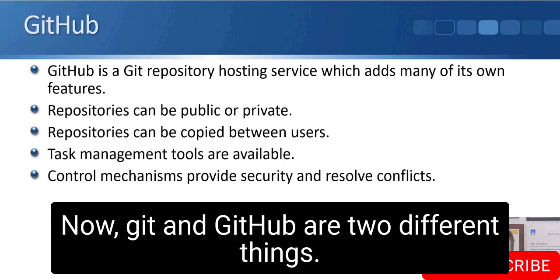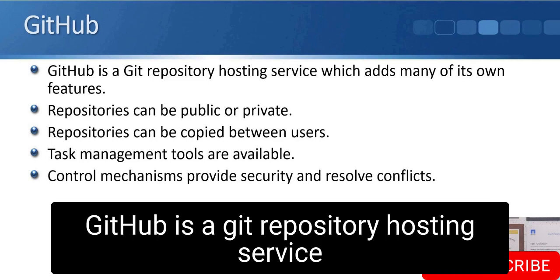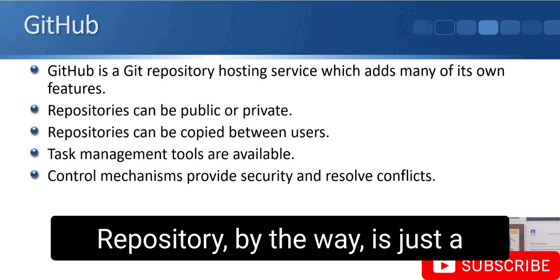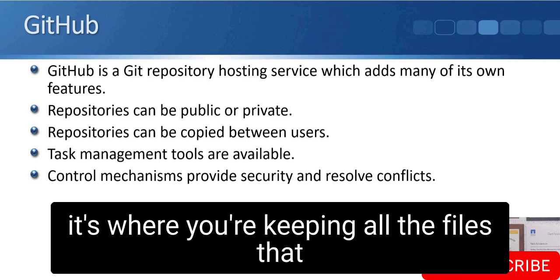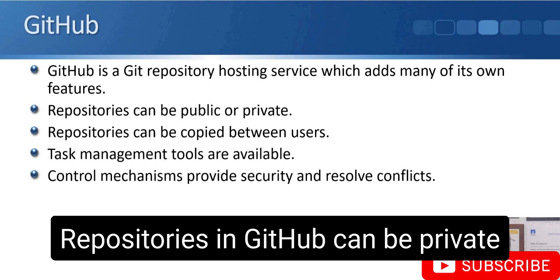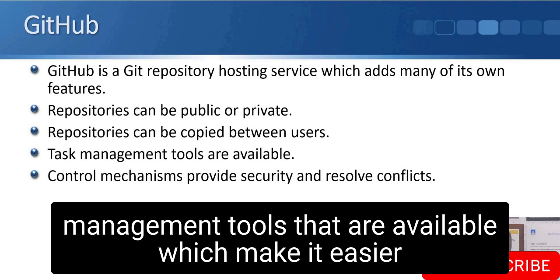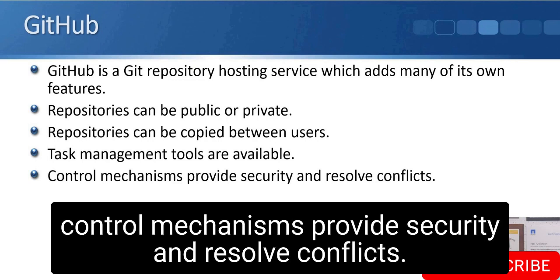There's also GitHub. Git and GitHub are two different things — Git is the version control software, while GitHub is a Git repository hosting service that adds many of its own features. A repository is simply a place to keep things, such as all the files making up your source code. Repositories in GitHub can be private or publicly shared, they can be easily copied between users, and task management tools are available to make team collaboration easier.